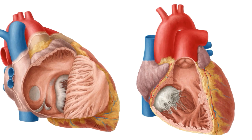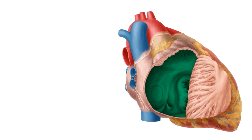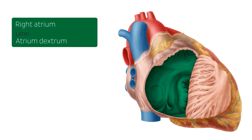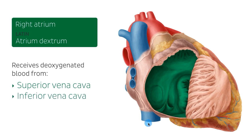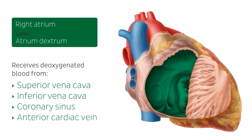Let's start with the very first structure highlighted in green: the right atrium. This part of the heart receives deoxygenated blood from the superior vena cava, which you can see here on this image, and also from the inferior vena cava. The right atrium also receives deoxygenated blood from the coronary sinus, the anterior cardiac vein, and the smallest cardiac vein. So all of those structures will be taking deoxygenated blood into the right atrium.